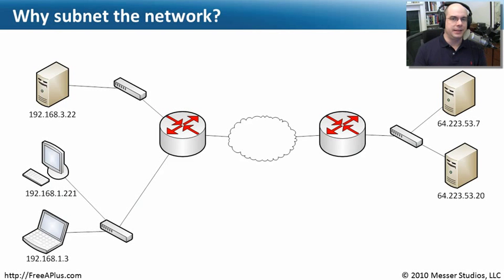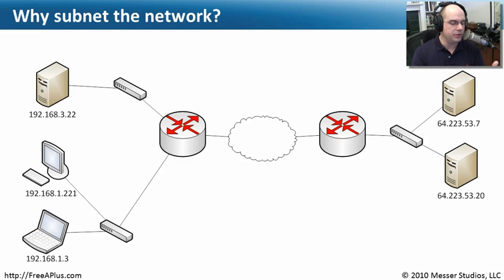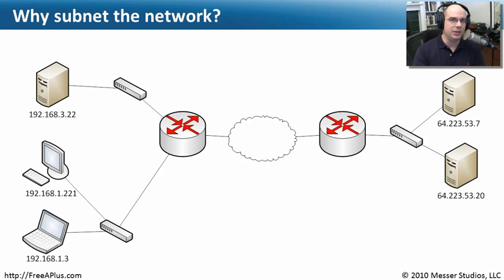I was just speaking about subnet masks and why you have to subnet the network. If you've had to calculate these things before — figuring out what your IP address is, what your subnet mask is, what your default gateway is — you notice whenever you're configuring IP on a machine, TCP/IP protocol on a machine, you need to at least know those three things: your IP address, your subnet mask, and your default gateway.